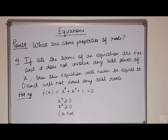A last point is, if all the terms of an equation are positive and it does not involve any odd power of x, then this equation will never be equal to 0 and will not have any real roots. For example, f(x) equals x to the power 4 plus x square plus 1 equals 0. Then obviously, x to the power 4 will be greater than or equal to 0, x square will be greater than or equal to 0 and 1 will be positive. And we know that sum of three positive numbers cannot be equal to 0 for any real values of x. Mind that even powers will make negative values positive.